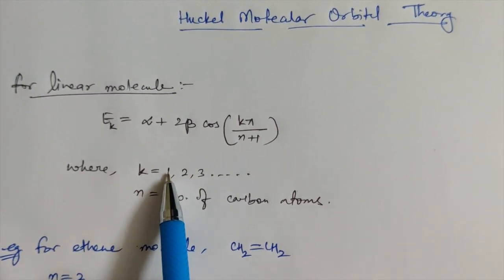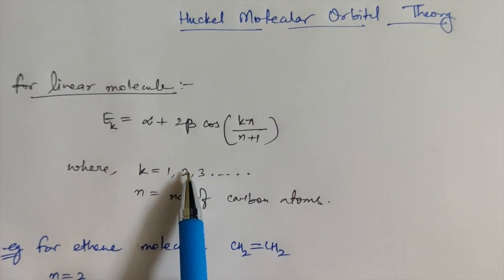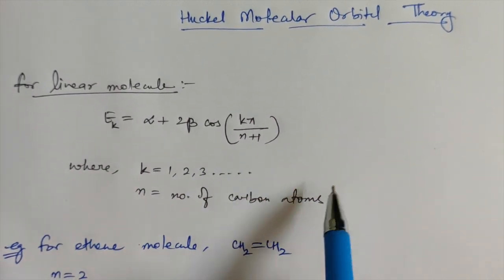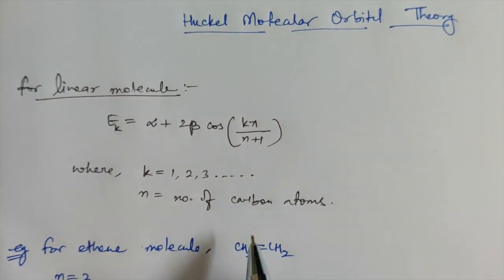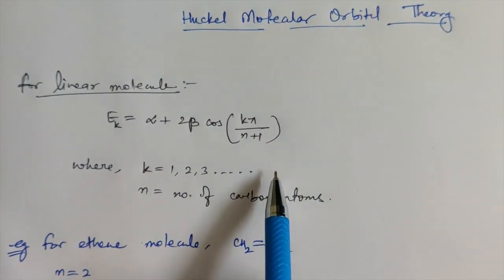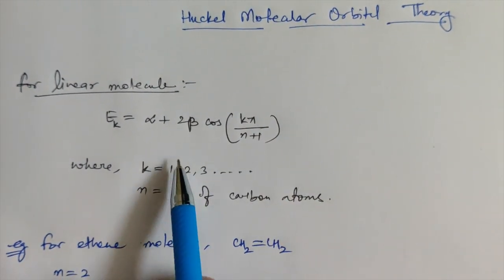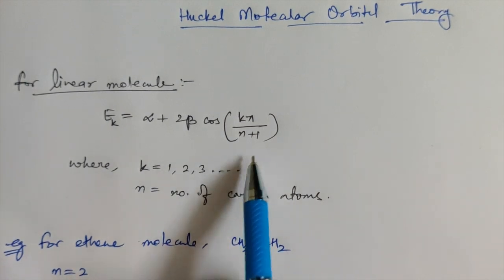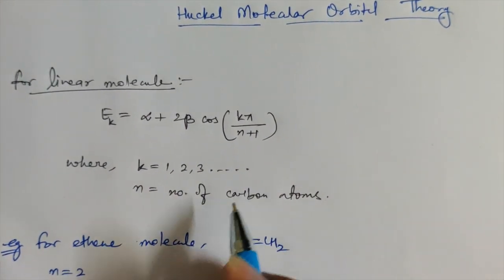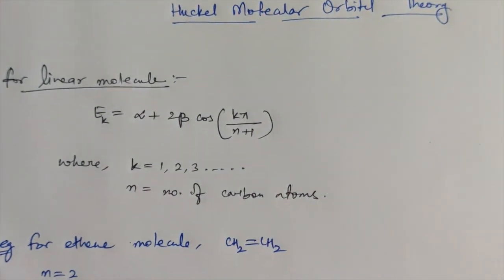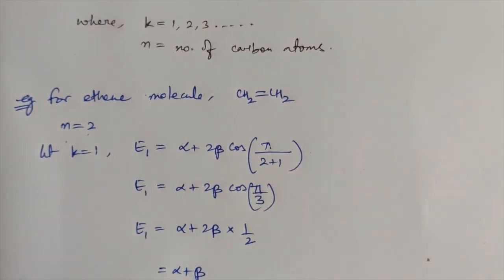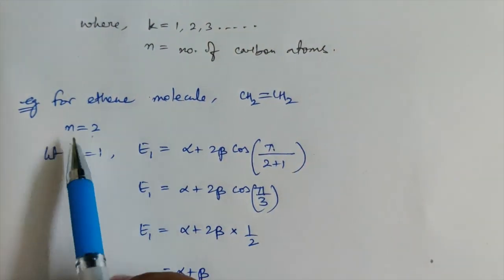K can have values starting from one up to the value of N, where N is the number of carbon atoms. So how many carbon atoms you have determines the range of K. This will be much clearer with an example — let's take the ethene molecule.